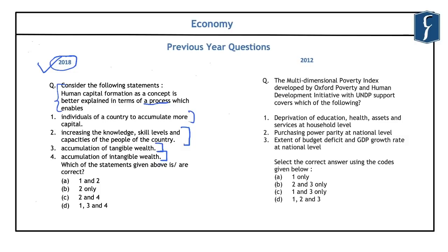Human capital formation is different from physical capital formation. Investment in human capital is done through education and health. The second statement — increasing the knowledge, skill levels and capacities of the people — refers to human capital formation. However, investment in education and health and the returns are not tangible wealth; hence statement three is incorrect. The correct answer is C, that is 2 and 4.